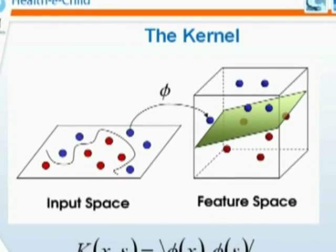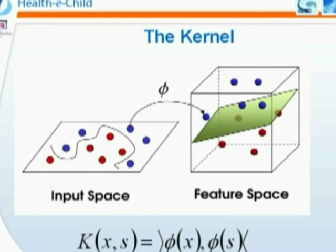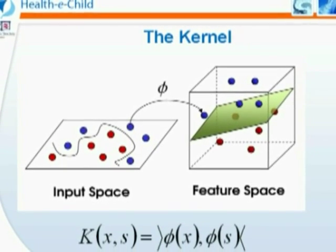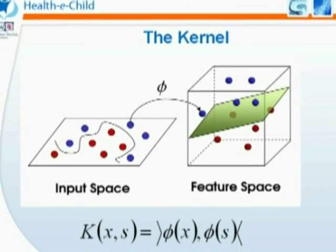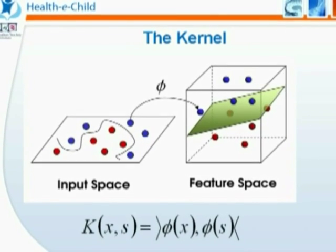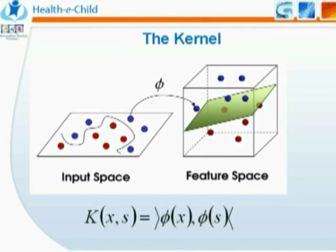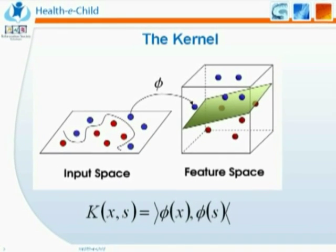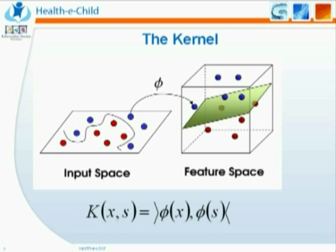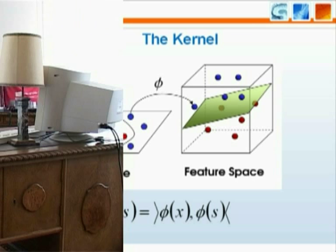A kernel is an implicit representation of a non-linear function which maps input data in higher dimensional space. Basically speaking, it allows us to perform similarity searching in an efficient way.